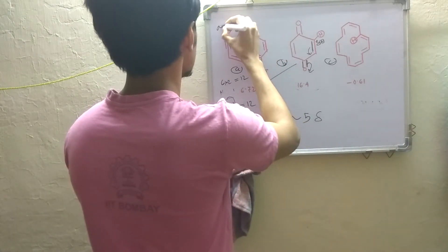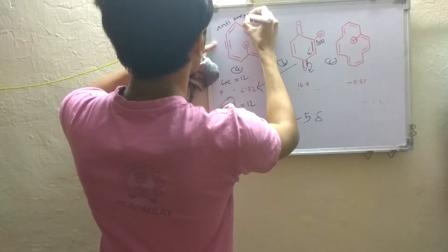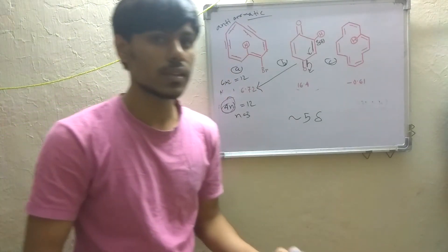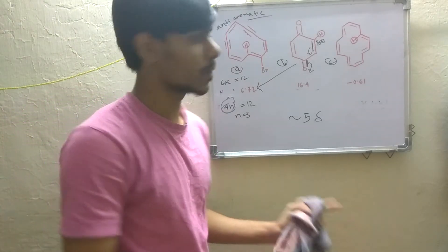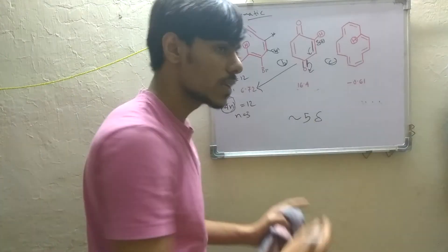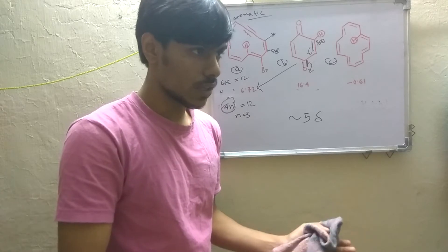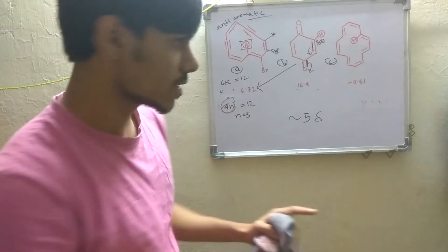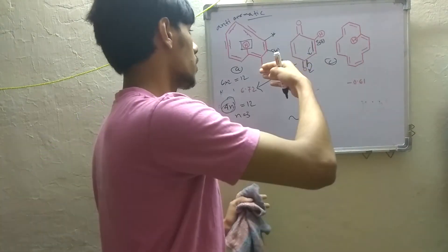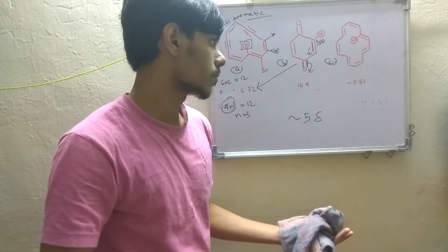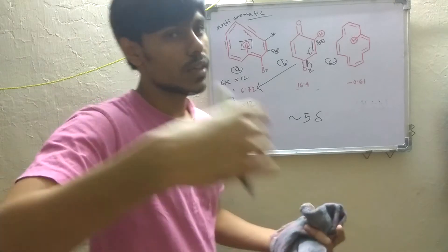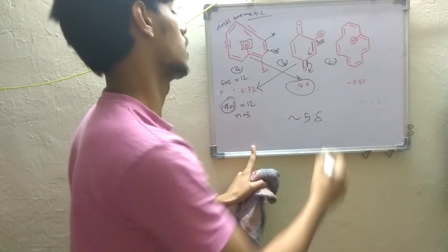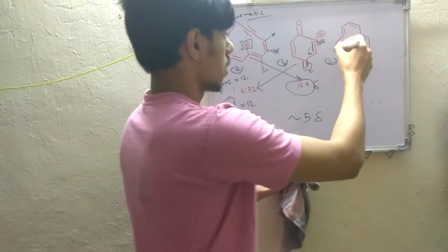Compound A is an anti-aromatic system. We just said that for an anti-aromatic system, if there is a proton at the periphery of the ring, it will experience less magnetic field. But in this case, the proton given is on the inner side of the ring, so it will experience more magnetic field. If it experiences more magnetic field, its resonating frequency will increase, and this is why it will resonate at 6.4 delta.